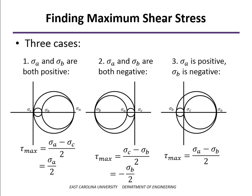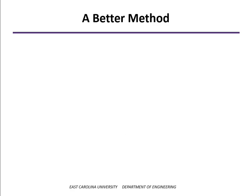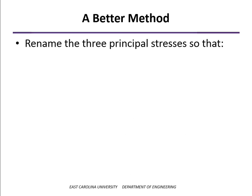The third case: if sigma a is positive and sigma b is negative, then the radius of the largest circle is as shown. Rather than determining which case applies, an easier approach is: once you find the three principal stresses — two from the Mohr circle and the third equal to zero — rename them sigma 1, sigma 2, and sigma 3, where sigma 1 is always the largest and sigma 3 the smallest. Then the maximum shear stress is always the difference between sigma 1 and sigma 3 divided by 2.